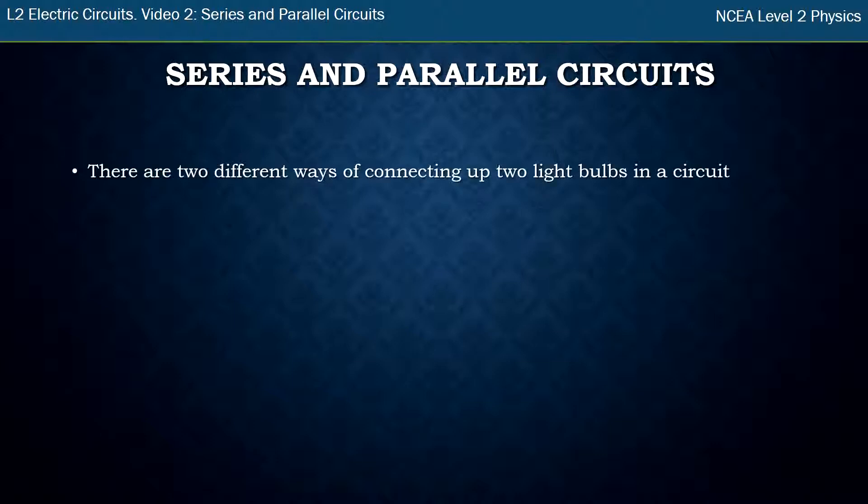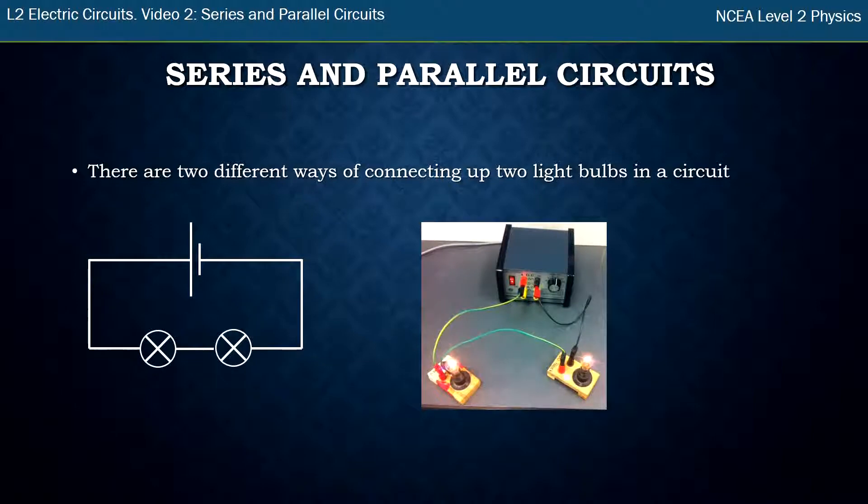There's two different ways of connecting up a circuit when you've got two bulbs in that circuit. One way is you just put the bulb one after another and this is what it looks like if you were to actually make the circuit using components and this is called a series circuit. A definition for a series circuit is that the bulbs are in the same electrical path.